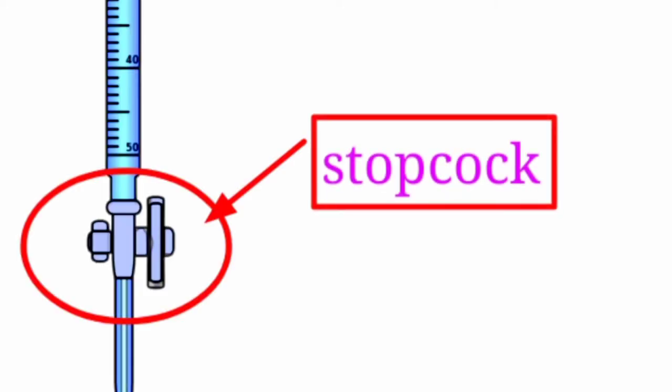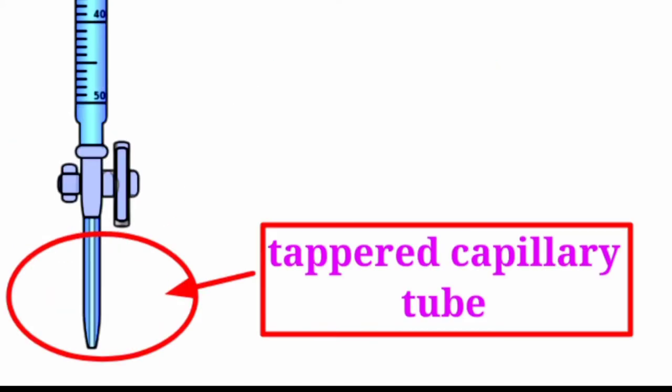It is a long graduated glass tube with a stopcock at its lower end and a tapered capillary tube at the stopcock's outlet. The flow of liquid from the tube to the burette tip is controlled by the stopcock valve.